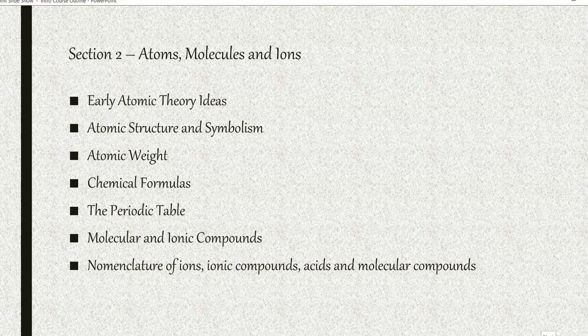In section two, we're going to be looking at atomic structure, atoms, molecules, and ions. Some historical information first on atomic theory, followed by atomic number, atomic weight, symbolism, putting atoms together to form chemical formulas, and then looking at the periodic table of the elements, identifying and distinguishing between molecular and ionic compounds, and then learning how to name ions, ionic compounds, acids, and molecular compounds as well.